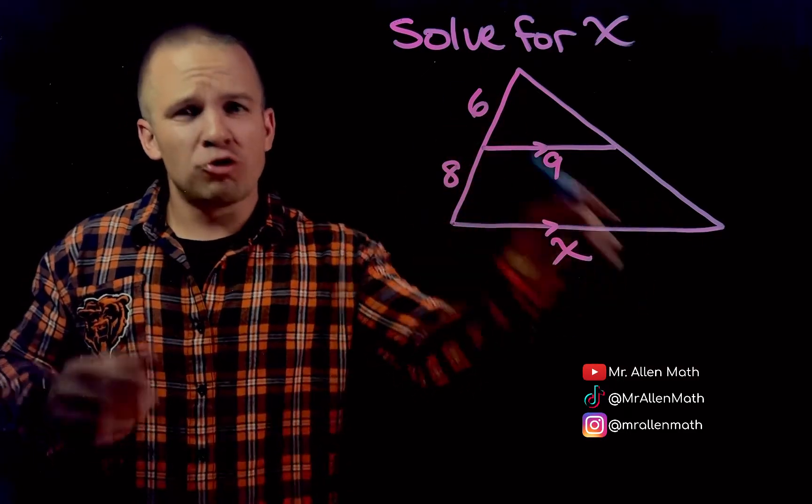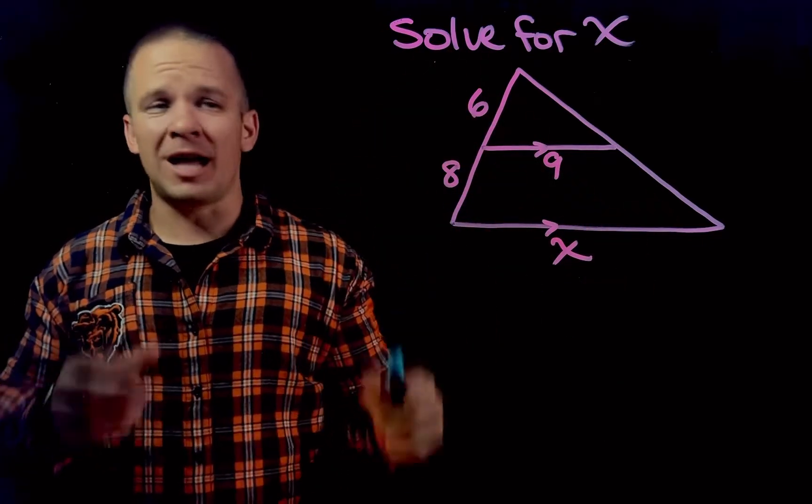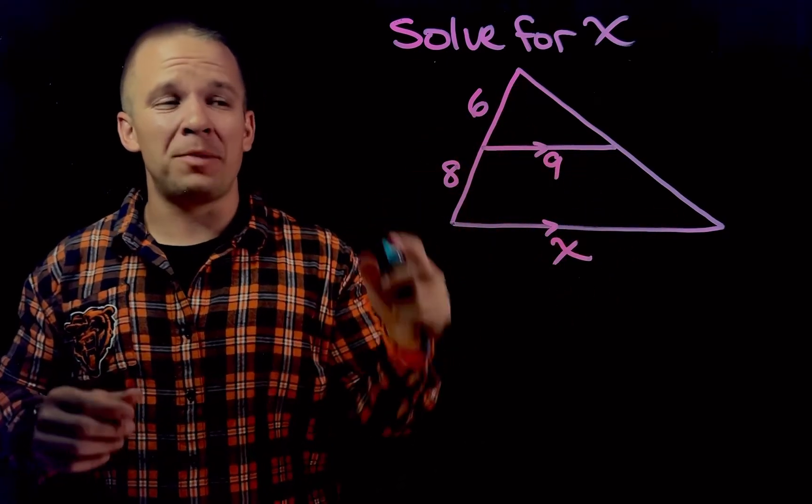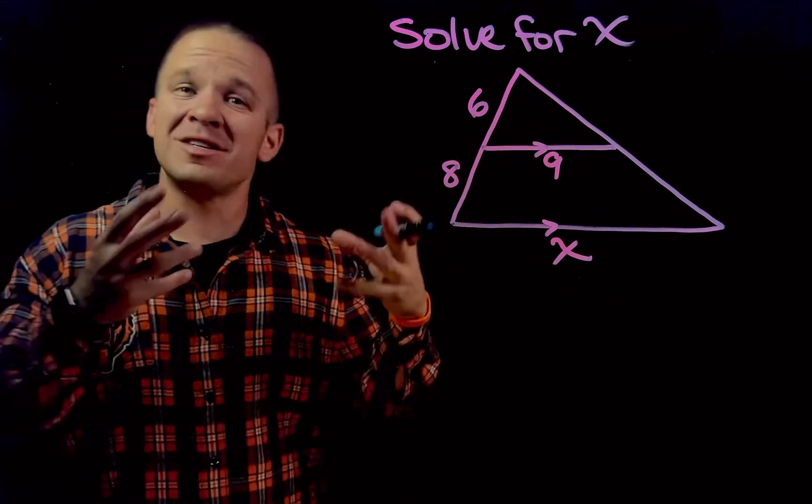Now, it looks like to me I've got two triangles going on. I've got some parallel lines which tells me that these angles are congruent, I've got these angles congruent, and they share this angle up here. These two triangles are similar, bro.